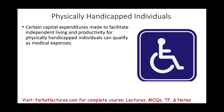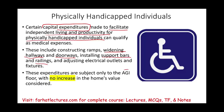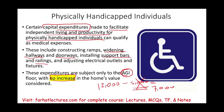Capital expenditures made to facilitate independent living and productivity for physically handicapped individuals qualify as medical expenses. Examples include widening hallways and doorways, installing support bars and railings, and adjusting electrical outlets and fixtures. Importantly, for physically handicapped individuals, these expenses are subject only to the 7.5% AGI floor — there is no reduction for any increase in the home's value, unlike the elevator example.